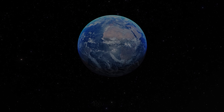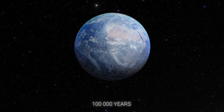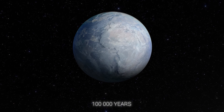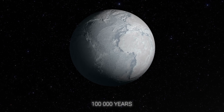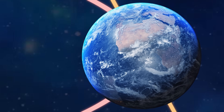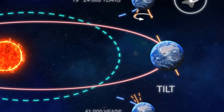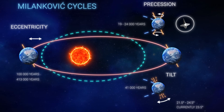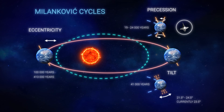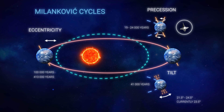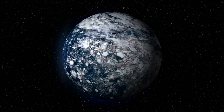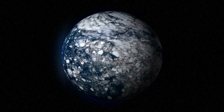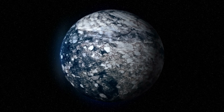In less than 100,000 years, the Earth will once again turn into a lifeless ice flow. The reason for this is the Milankovitch Cycle, which gradually changes the Earth's orbital position. The endless flow of these cycles dramatically changes the planet's climate for thousands of years.